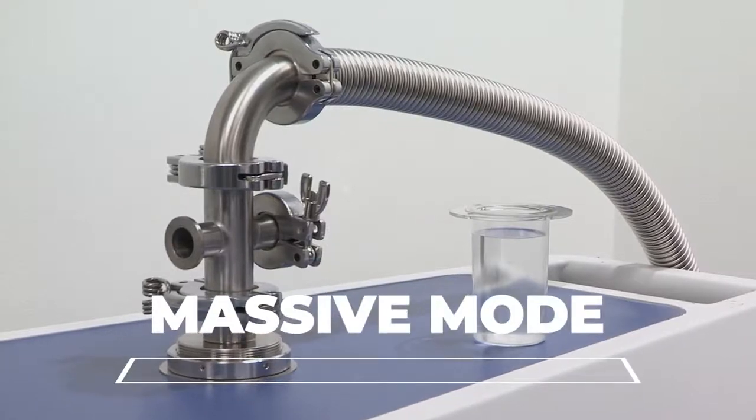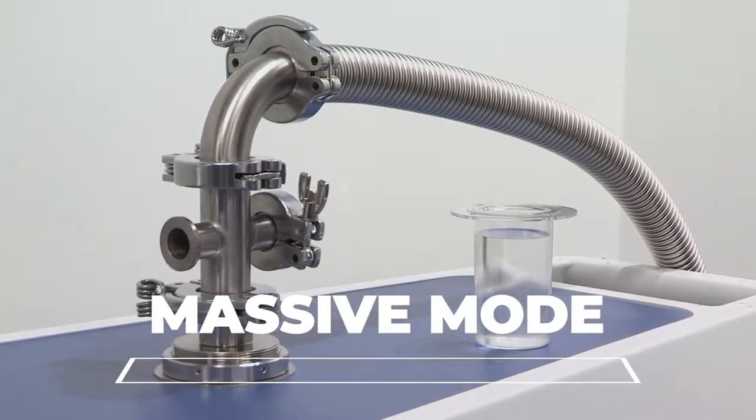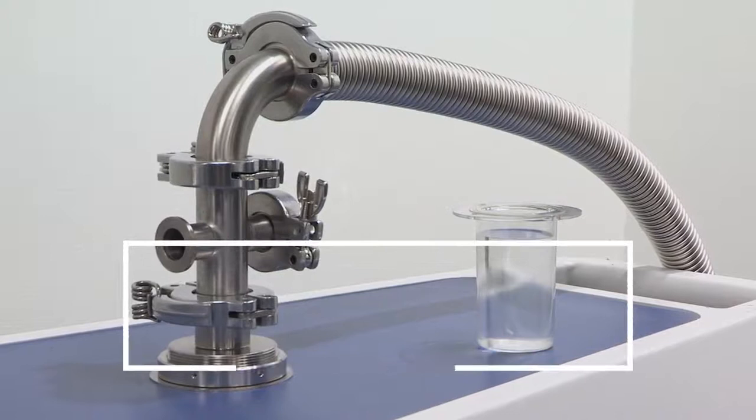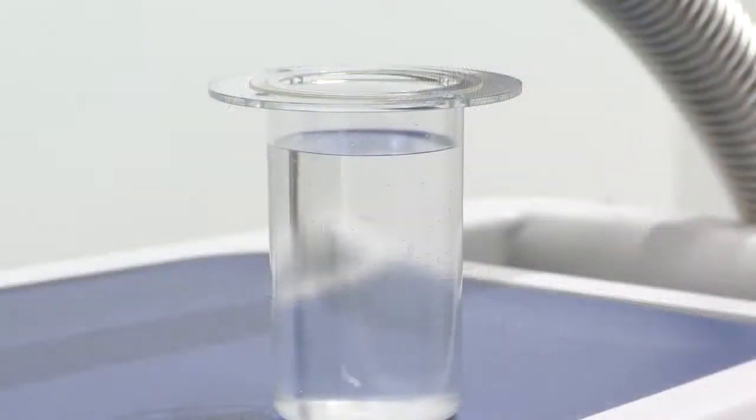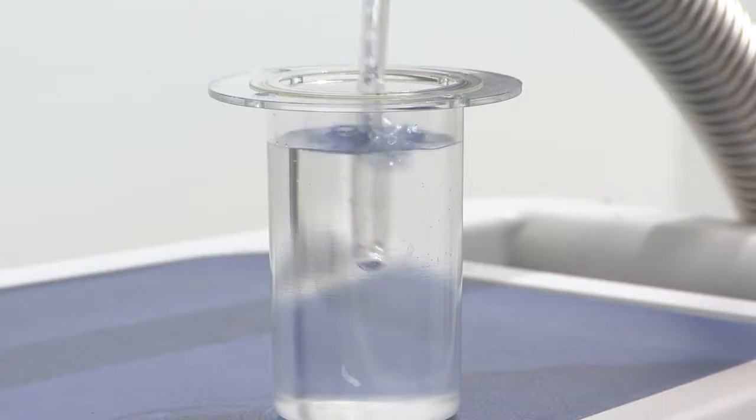Massive Mode enables you to start leak checking right from the beginning with the standard regular spraying procedure. For Massive Mode, 5 to 10 bubbles of helium gun flow shall be adjusted in order to quickly identify the locations of the leak.